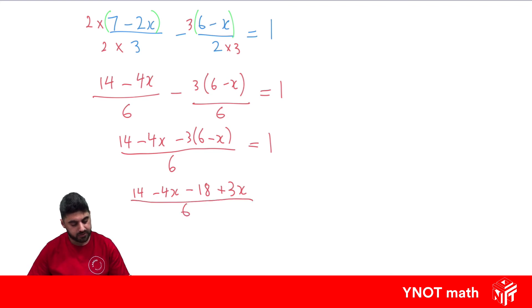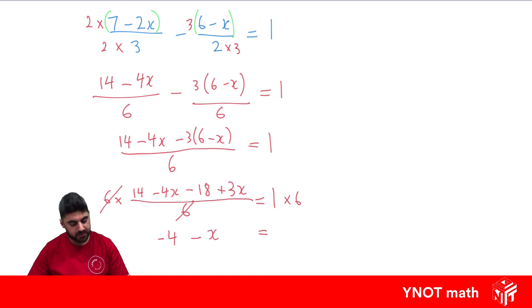So that's all over 6 equals 1. Multiplying both sides by 6 cancels the denominator. Simplifying the numerator: 14 minus 18 is minus 4, and minus 4x plus 3x is minus x, so minus x equals 6. Adding 4 to both sides: minus 4 plus 4 is 0, giving minus x equals 10. Multiplying both sides by negative 1 gives x equals minus 10.